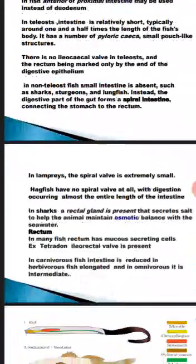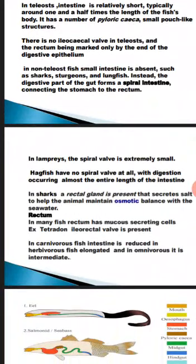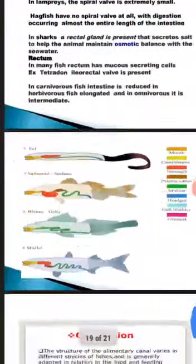In many fishes the rectum has mucus-secreting cells, for example in Tetradon. In carnivorous fishes the intestine is reduced; in herbivorous fishes it is elongated; and in omnivorous fishes it is intermediate in length. As seen in the diagram, different parts are color-coded: mouth, esophagus, stomach, pyloric caeca, midgut, hindgut, gallbladder, and gizzard — shown for eel, salmonids, bream, and mullets.